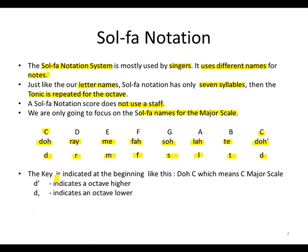Now the key is indicated at the beginning as Do C, which will mean that we are in the C major scale or the C major key. We can also indicate octave higher with a comma above or a one, and octave lower with a comma below or a one.